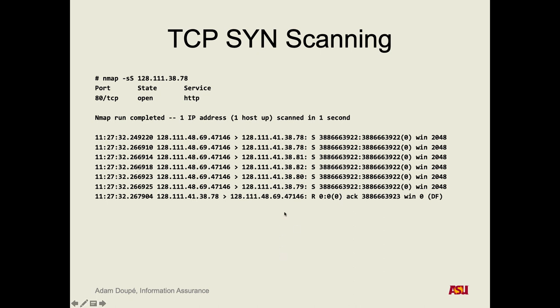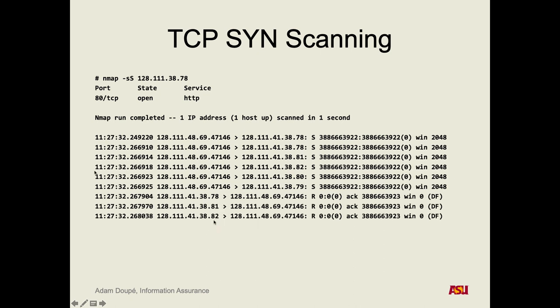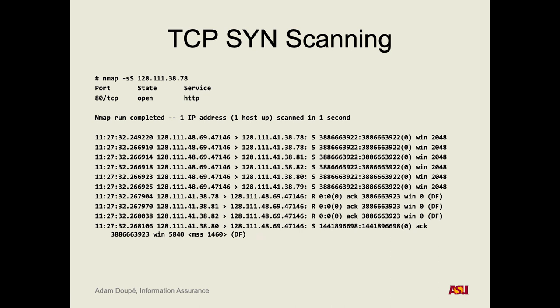We get back a reset packet from port 78 — the R here means reset. We get a reset from 81, a reset from 82, and from port 80 we get back a SYN-ACK. tcpdump is literally just parsing the IP headers and TCP headers and showing it in this format.